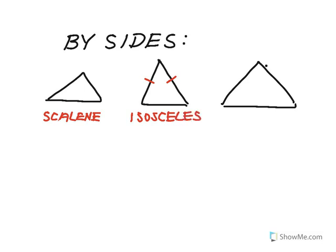If I have all three sides congruent, it's called an equilateral triangle. 'Equal' meaning equal and 'lateral' meaning sides, so equilateral means equal sides.